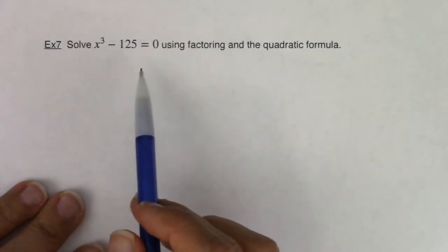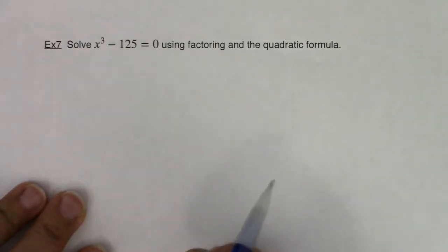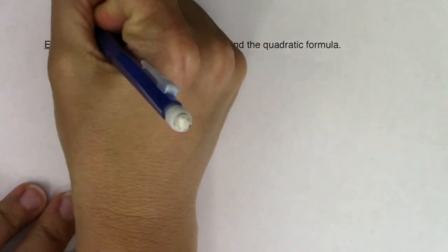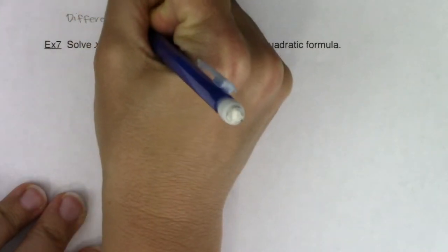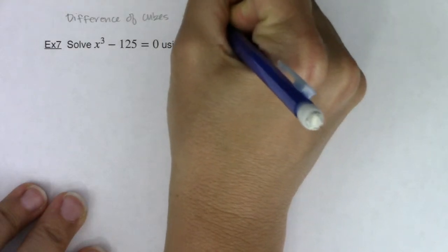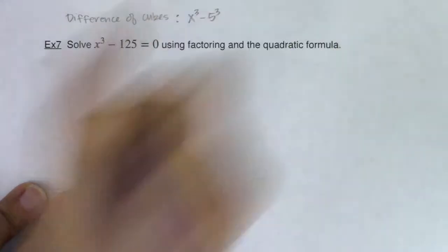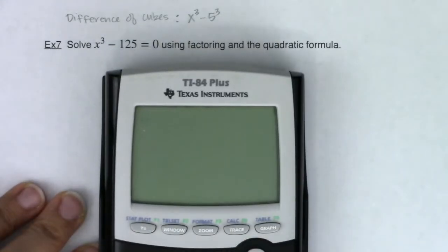Now, I don't know how long it's been since you factored, but maybe you recognize this as a difference of cubes. And I'm just going to write that phrase here, difference of cubes. This is literally x cubed minus 5 cubed. And if you're wondering why I'm calling it 5 cubed, that's because that's what 125 is.